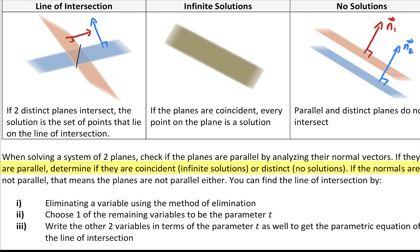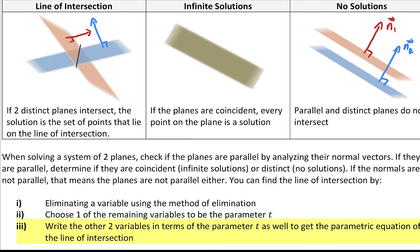If the planes are parallel, determine if they are coincident — infinite solutions — or distinct — no solutions. If the normals are not parallel, the planes are not parallel either, and we find the line of intersection by: first, eliminating a variable using the method of elimination; second, choosing one of the remaining variables to be the parameter t; and third, writing the other two variables in terms of t to get the parametric equations of the line of intersection.